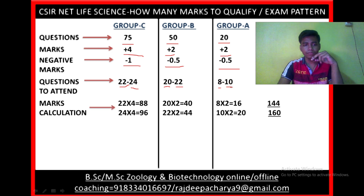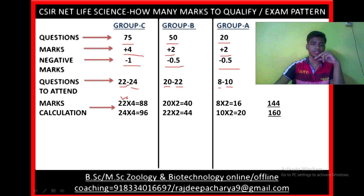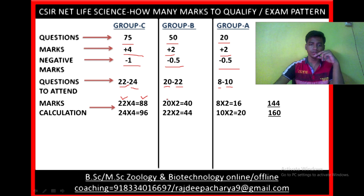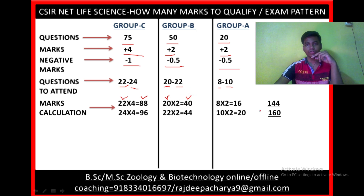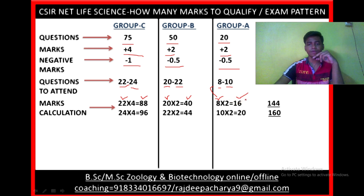Now let's talk about marks calculation. If you attempt the minimum 22 questions from Group C, each carrying 4 marks, you get 88 marks. If you attempt 20 questions from Group B, each carrying 2 marks, you get 40 marks. And if you attempt 8 questions from Group A, each carrying 2 marks, you get 16 marks. So 88 plus 40 plus 16 equals 144, which is enough to qualify CSIR Net Life Science and get JRF with a good rank.